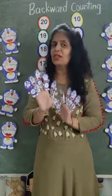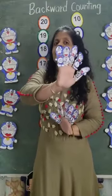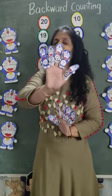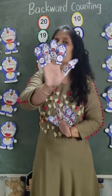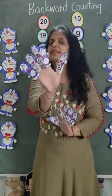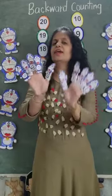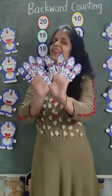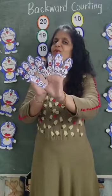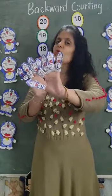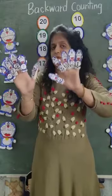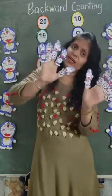Count with teacher. 10, 9, 8, 7, 6, 5, 4, 3, 2, 1. So this is backward counting.